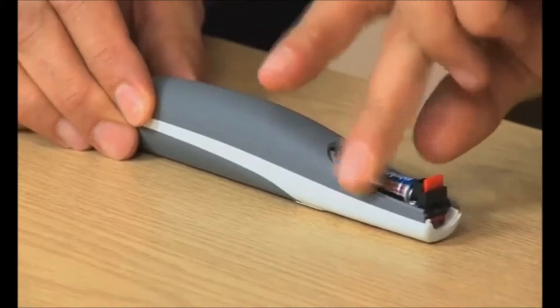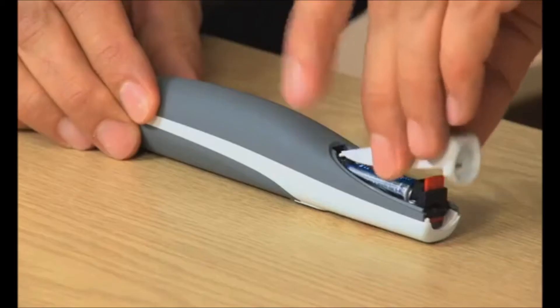Next, turn the pen over, slide off the back cover and insert the AAA battery provided, then replace the cover.